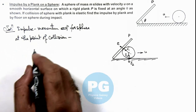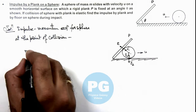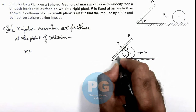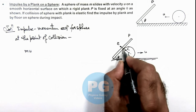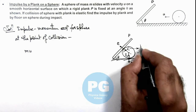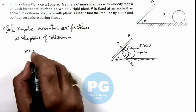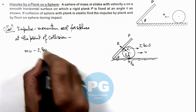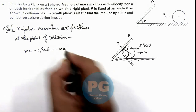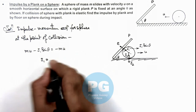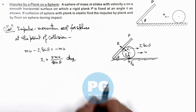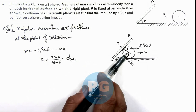The momentum with which the sphere was coming was mu toward the left. It experiences an impulse which is the horizontal component of J1. If this angle is theta, then with the vertical this angle is also theta. The horizontal impulse on the sphere due to the plank is J1·sin(theta). So we can write: minus J1·sin(theta) equals the final momentum of the sphere, which in the backward direction is minus mu. This gives J1 = 2mu / sin(theta). That is the first result — the impulse imparted by the plank on the sphere at the time of collision.